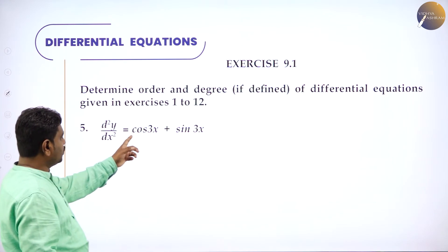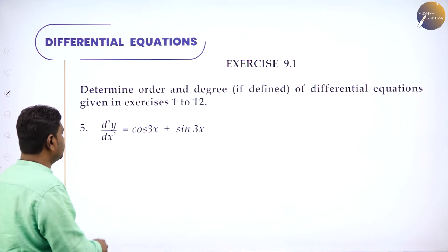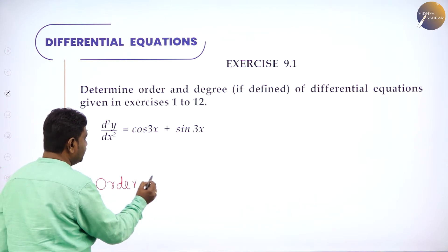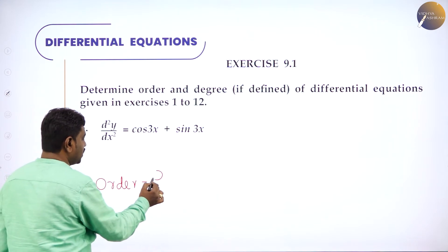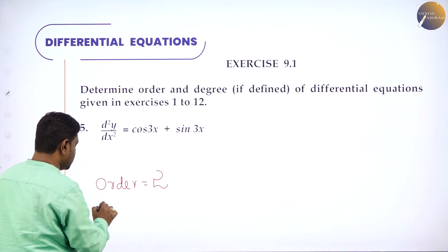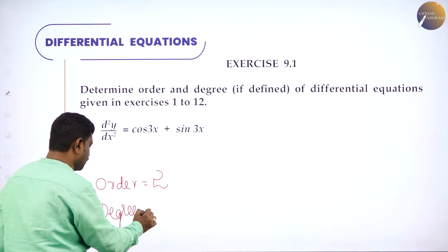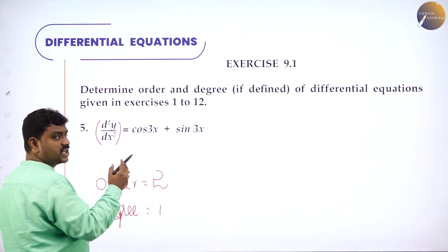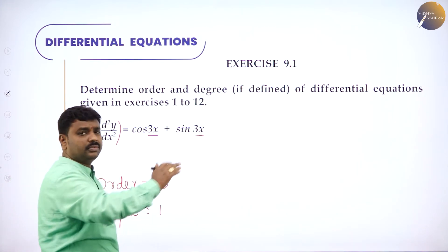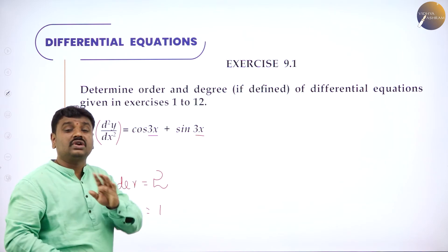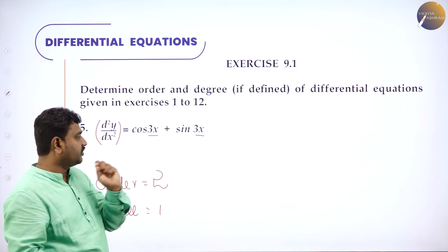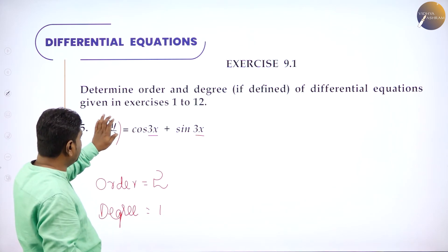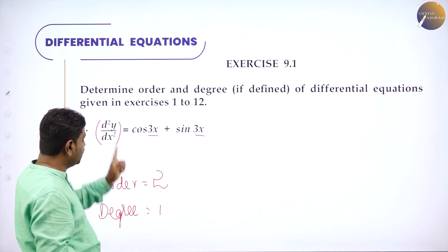Next problem: d²y/dx² = cos 3x + sin 3x. Order: d²y/dx² is 2 times differentiated, so order is 2. Degree: its overall power — d²y/dx² has no explicit power, meaning power 1, so degree is 1. Here, inside cosine or sine we do not have a derivative, so derivative does not act as an internal function, and degree is defined.